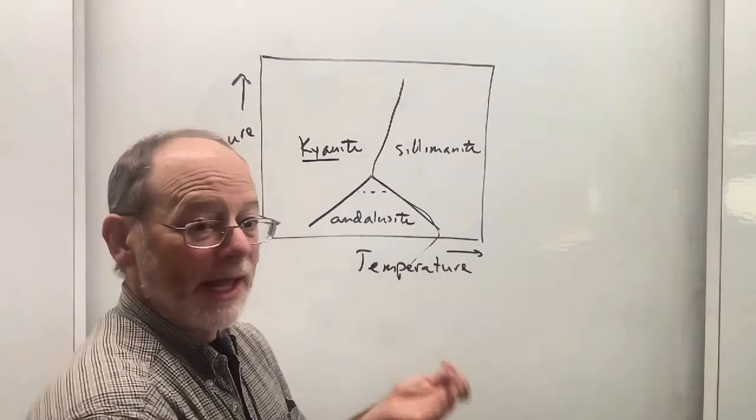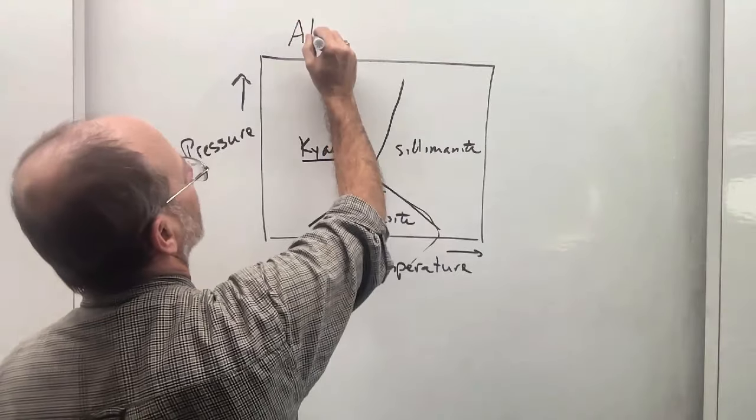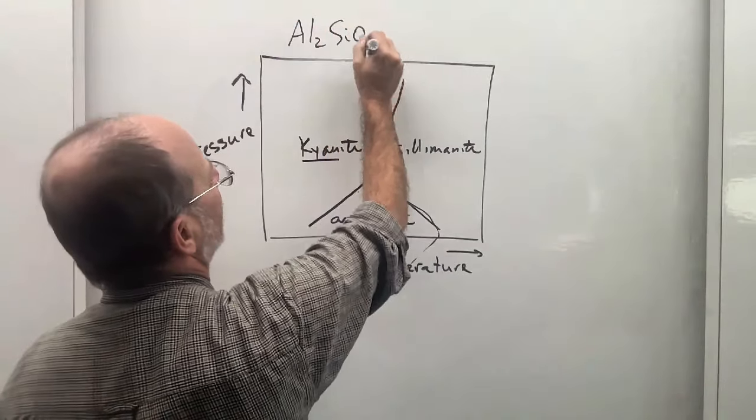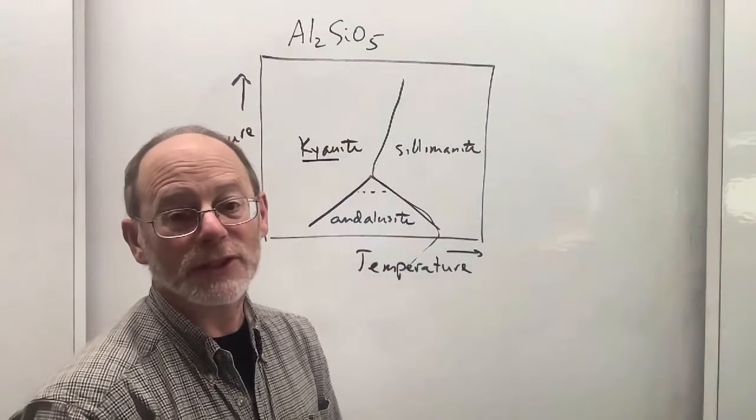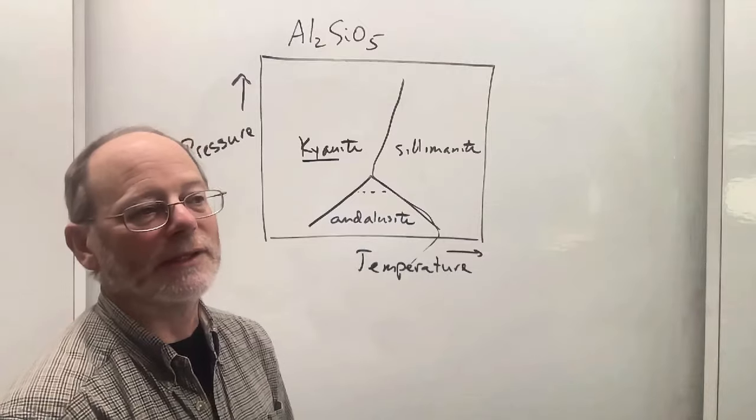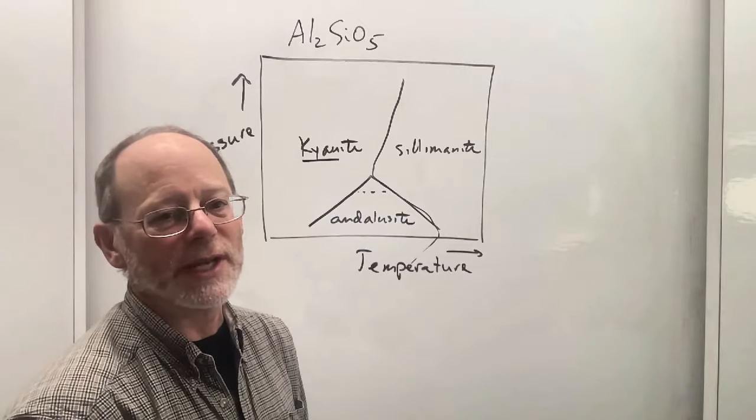Now, they all have the same composition, Al2SiO5, but they have different structures, and that means that they will exist under different pressure temperature conditions.